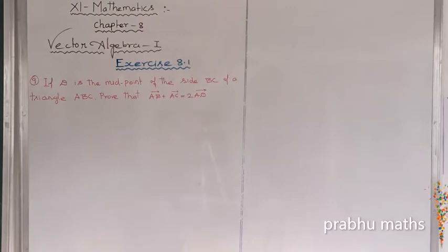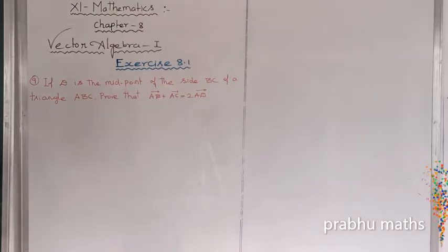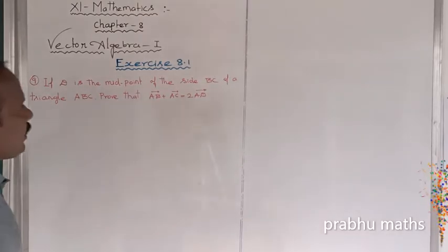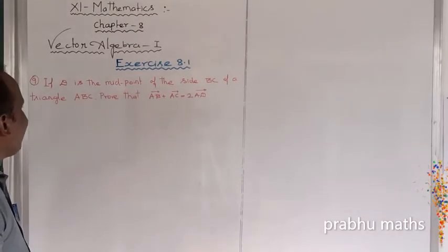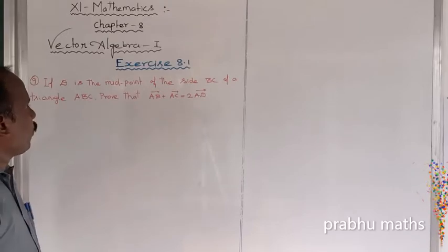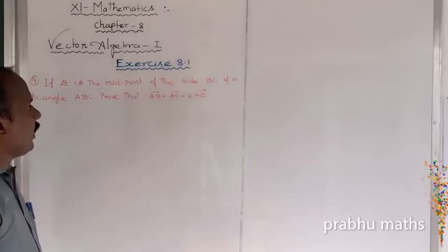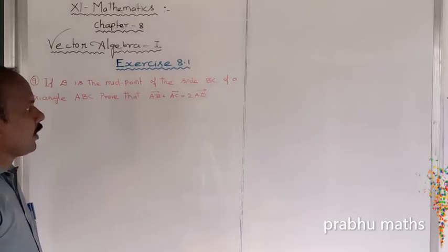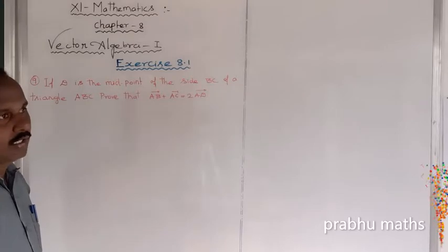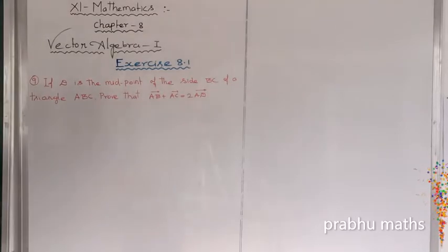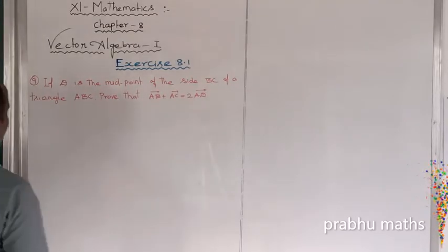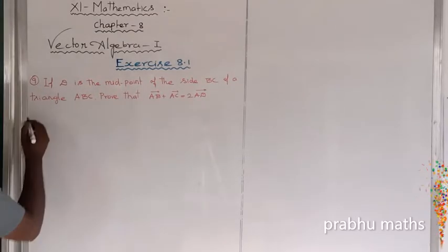Question: If D is the midpoint of side BC of a triangle ABC, prove that AB vector plus AC vector is equal to 2 times of AD vector. That is the given problem.